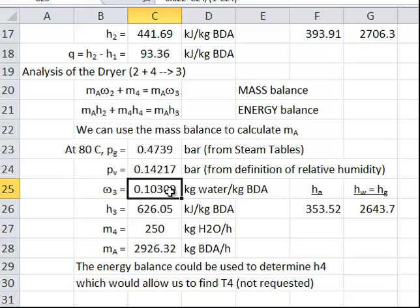And again, I can use the definition of humidity, and I find that it's 0.103 kilograms of water per kilogram of dry air. Now m4 was given as 250, and so I can solve for m sub a is going to be m sub 4 divided by ω3 minus ω2, coming up with 2,926 kilograms of dry air per hour are required as feed.